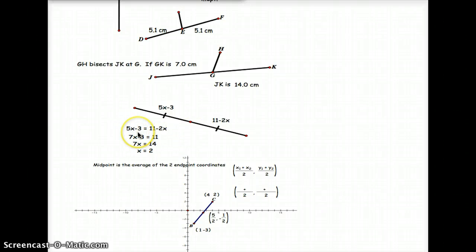So we can solve for x by setting them equal to each other. So we have 5x minus 3, based on our drawing, we know that it equals to 11 minus 2x because this right here is our midpoint creating two congruent segments. As I continue to solve, I'm going to go ahead and add 2x to both sides, that gives me 7x minus 3 equals 11.